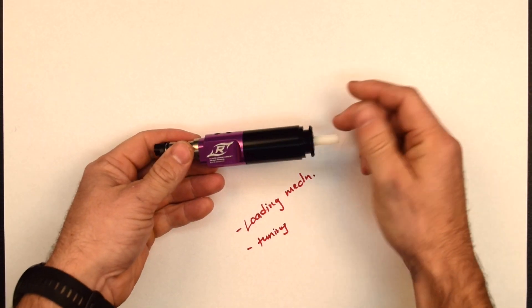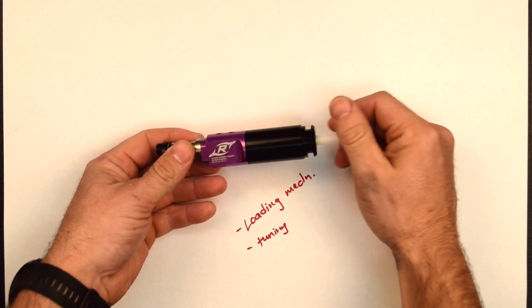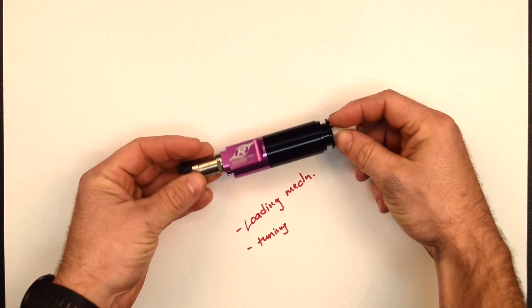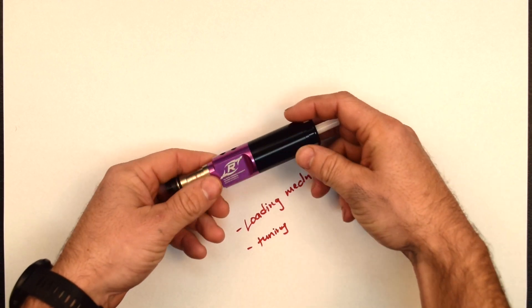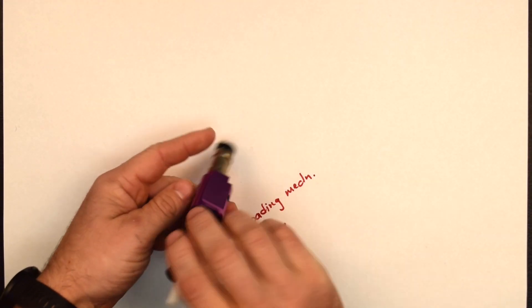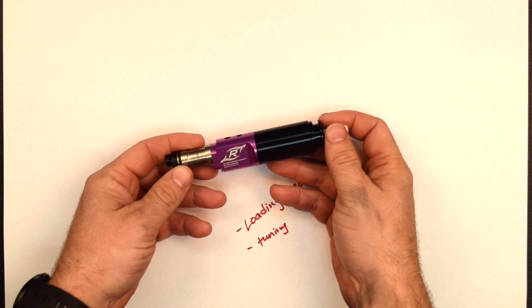So those of you that are familiar with the Reaper, this is going to look real similar. Looks almost identical from the outside. It'll have a different engraving on the backside here that says Gen 2, but overall it looks almost identical.